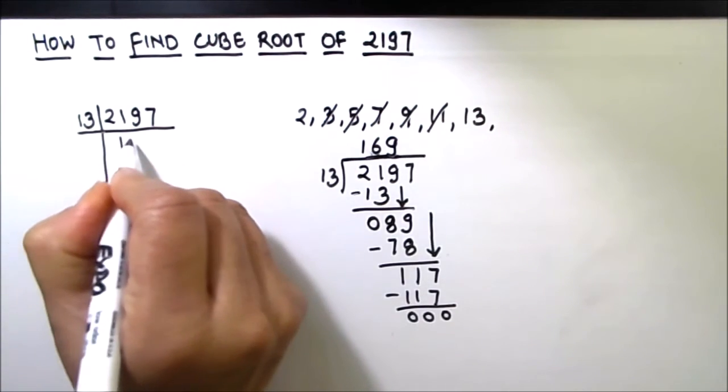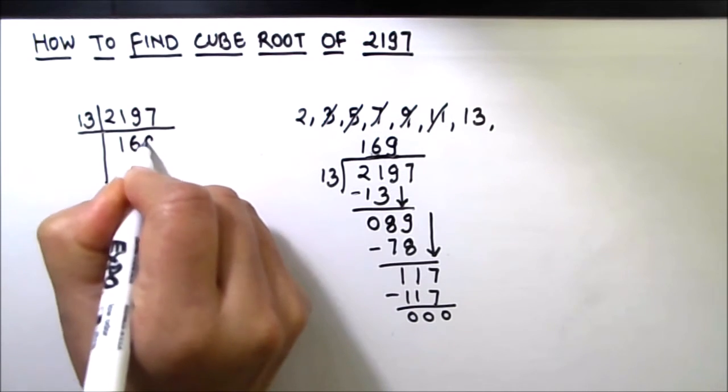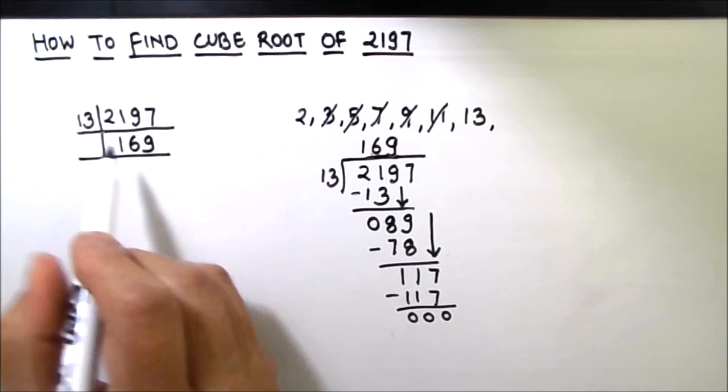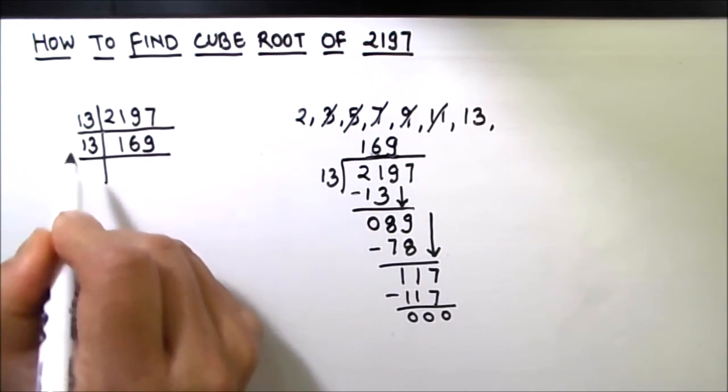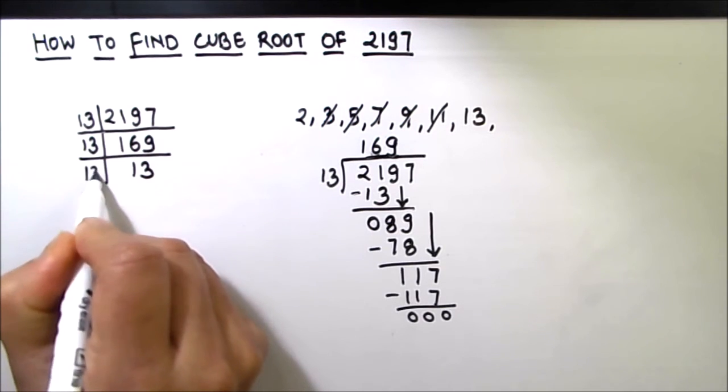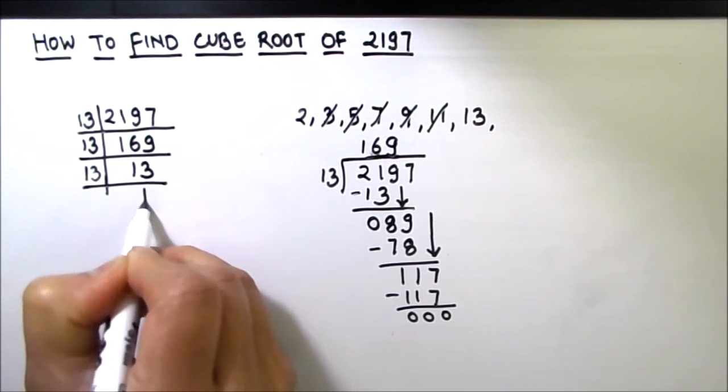So we got 169 by dividing it by 13. 169 is divisible by 13 again. So 13 times 13 is 169, and 13 times 1 is 13.